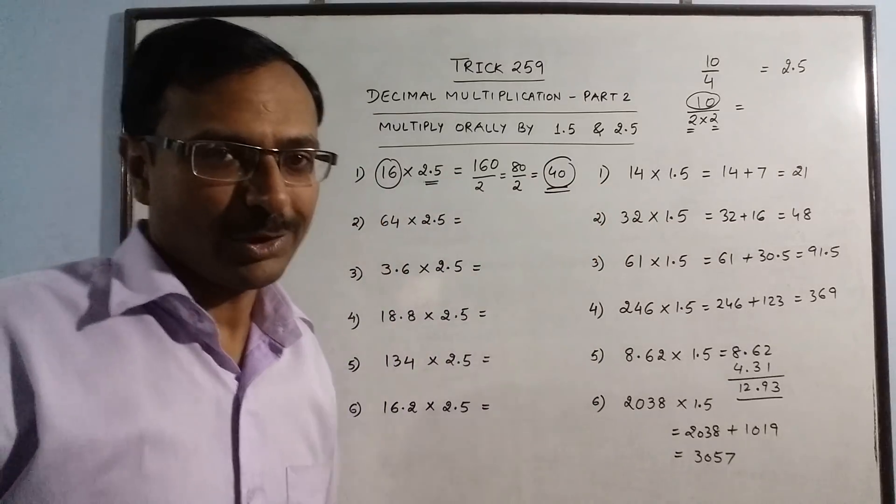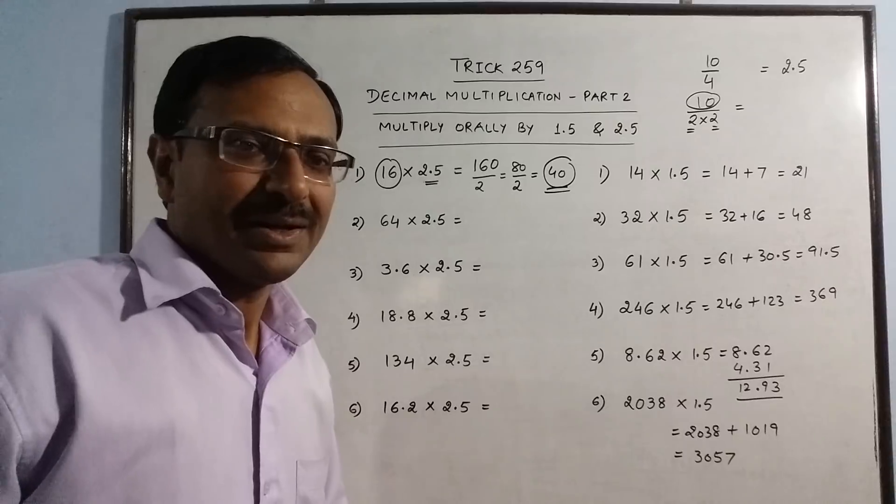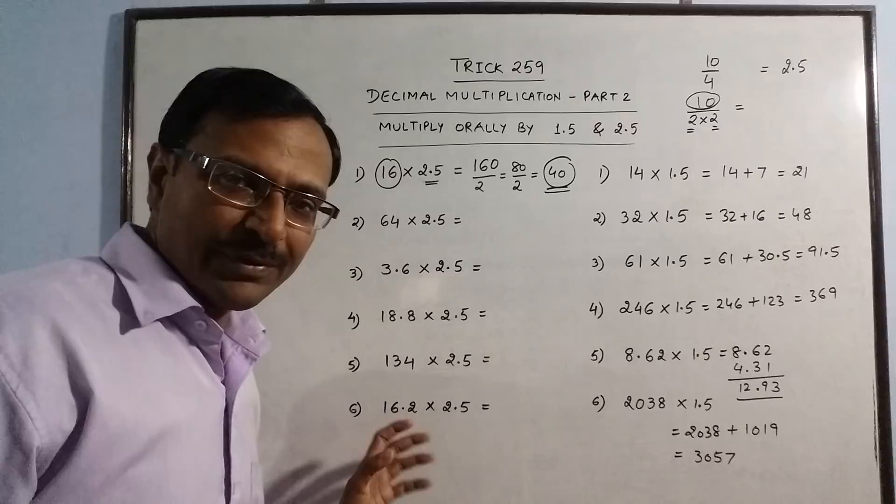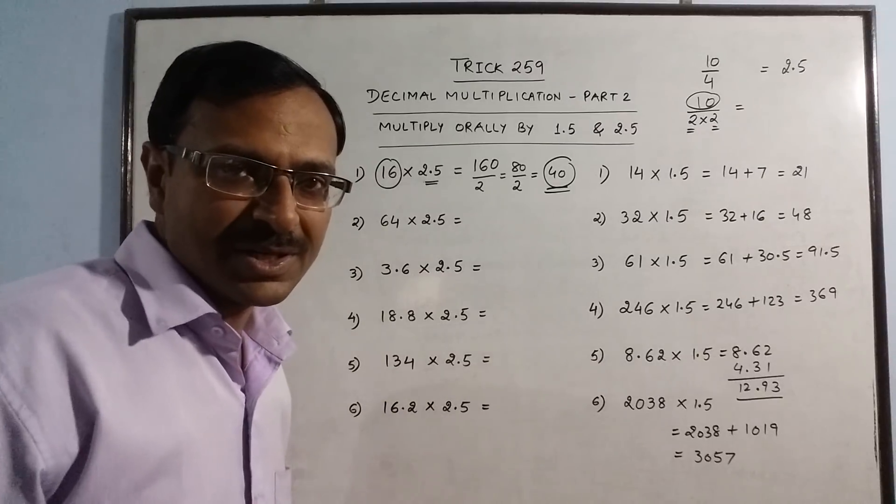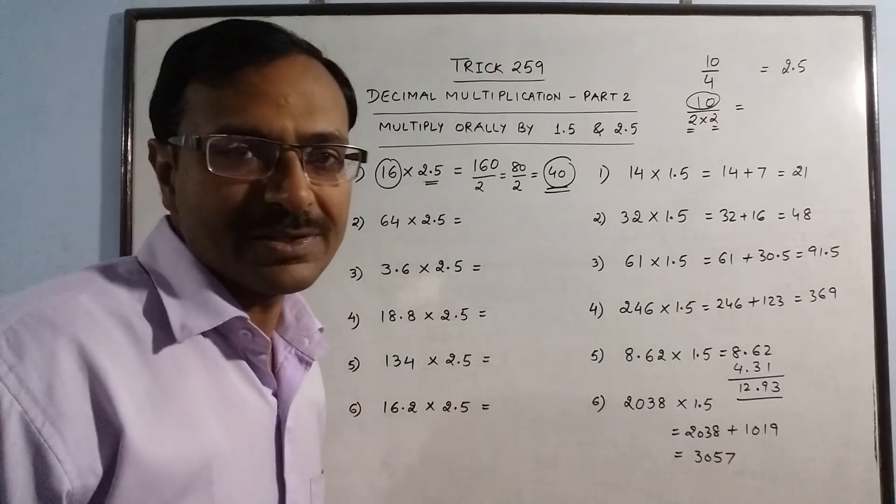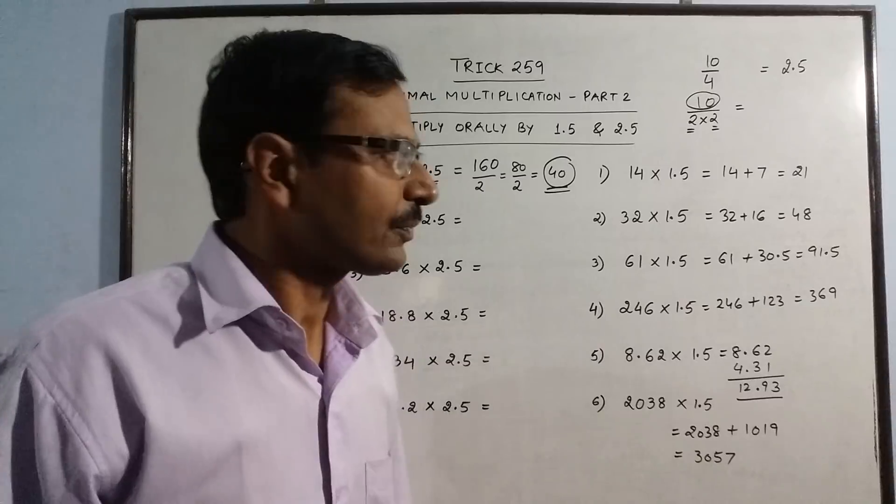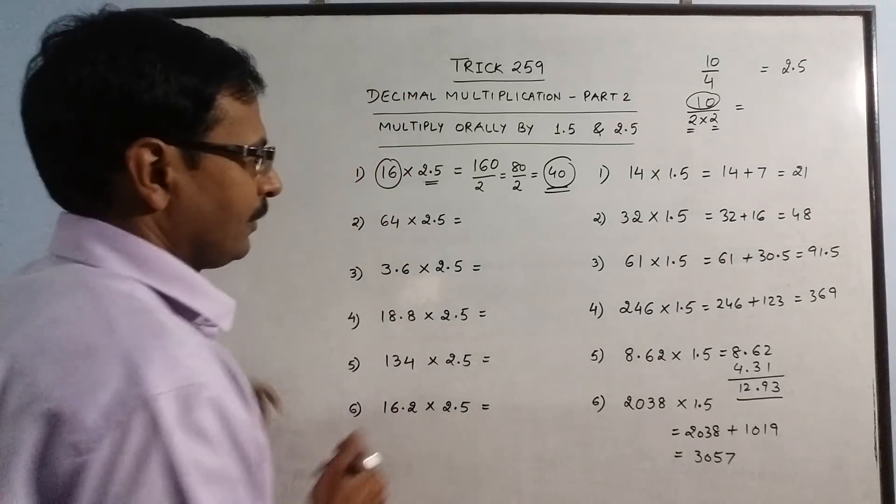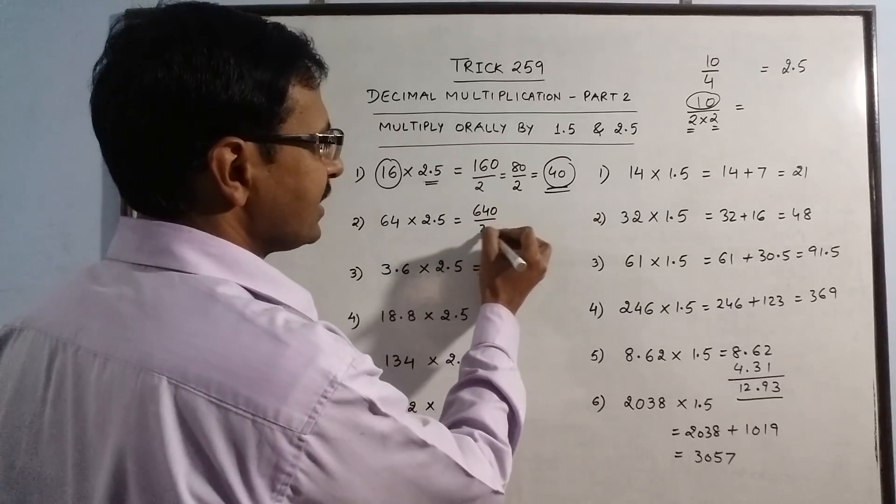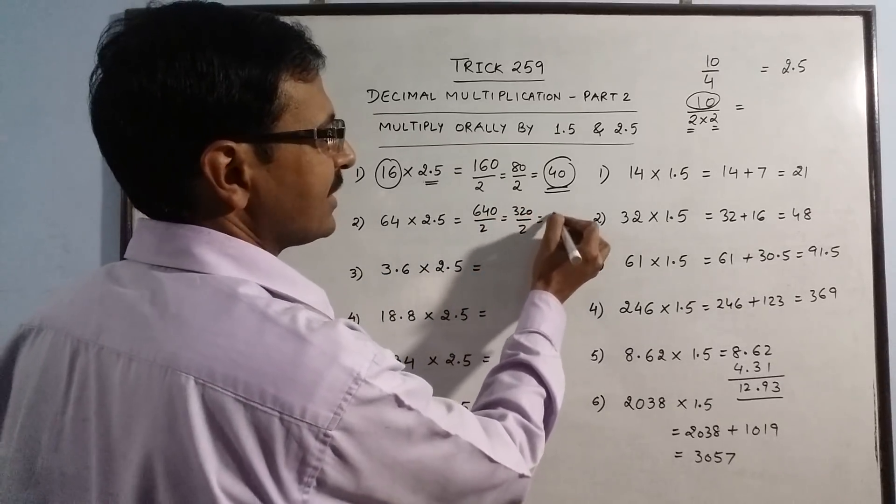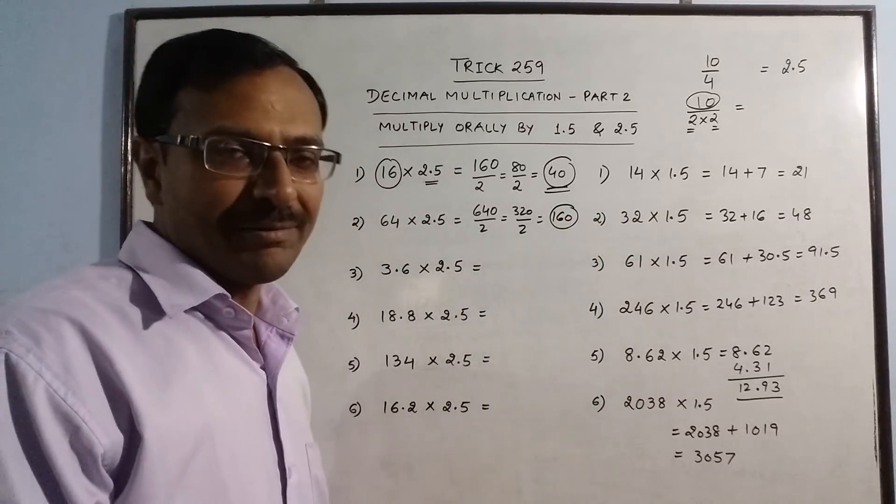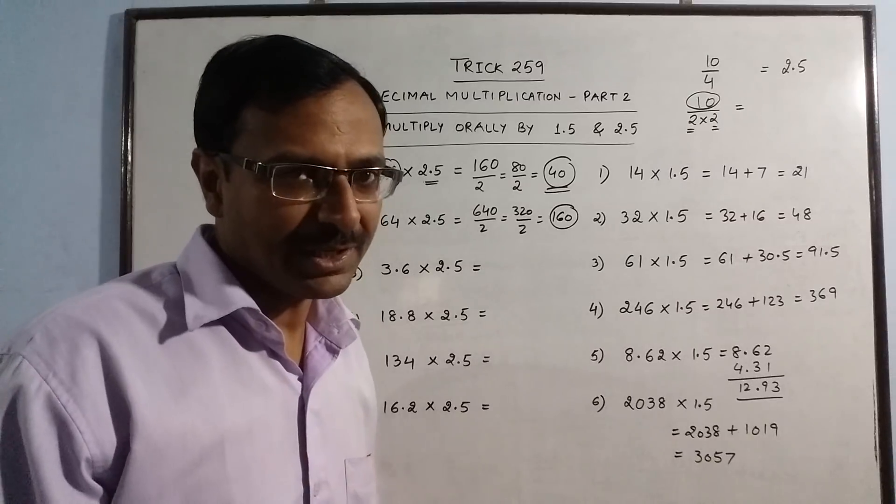With the practice of 4 to 5 questions, you will be able to understand this concept. Now see, 64: I am writing steps again. 640, half of this is 320, half of this is 160. So your answer is 160. Multiply by 10, half once, half second time, you get your answer.